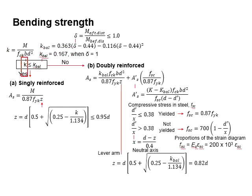If the k is equal or less than 0.167, we will know that it is a singly reinforced section. If the k is greater than 0.167, that means the section will be doubly reinforced.